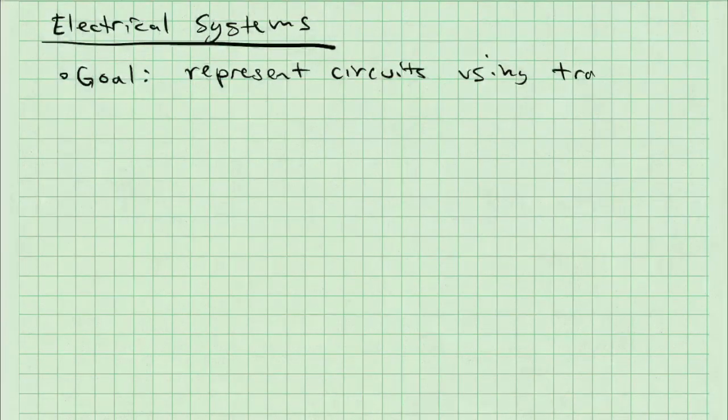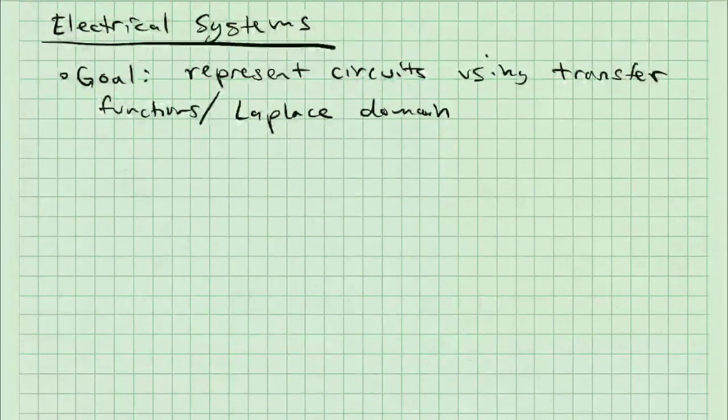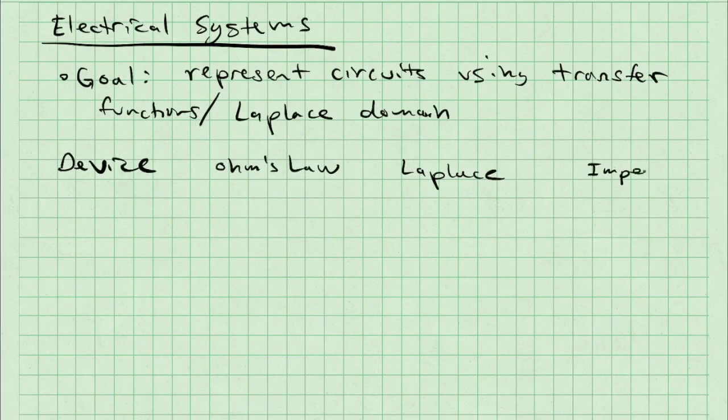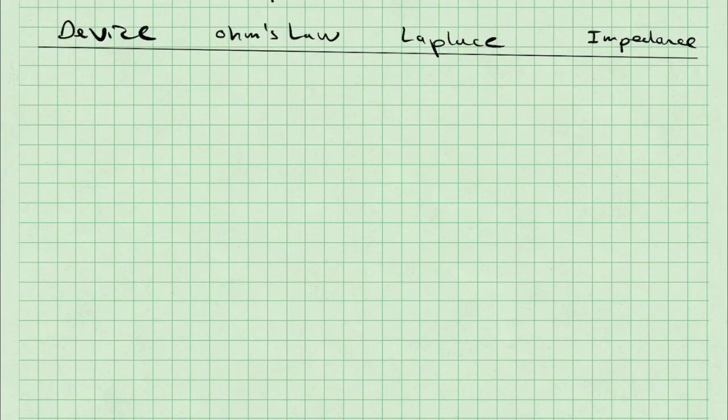To help us explore this further, I want to create a table which helps us to develop Laplace expressions for each passive circuit device that we're going to use. I'll have one column for the device, one column for the Ohm's Law expression, one column for the Laplace transform of that Ohm's Law expression, and another column which defines the impedance of that device.